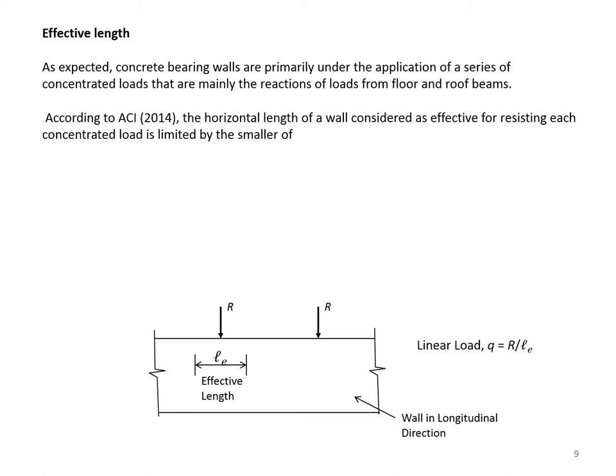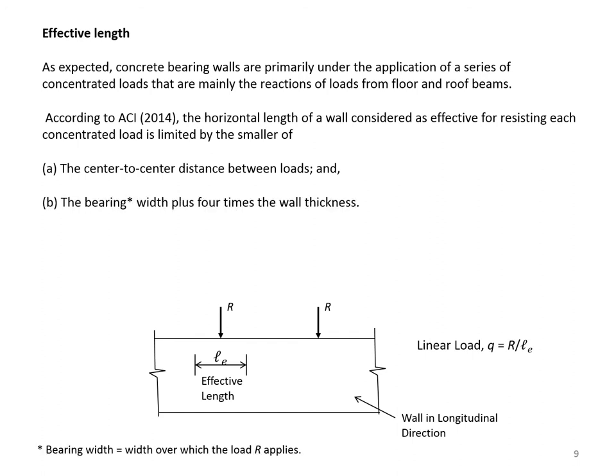According to ACI 2014, the horizontal length of a wall considered as effective for resisting each concentrated load is limited by the smaller of: the center-to-center distance between loads, and the bearing width plus four times the wall thickness. The bearing width is the width over which the load R applies.